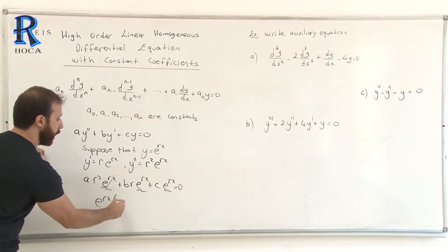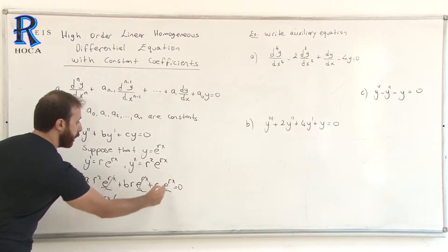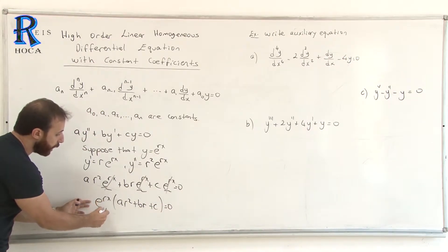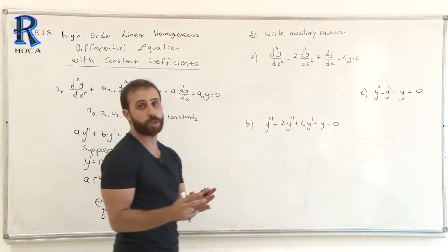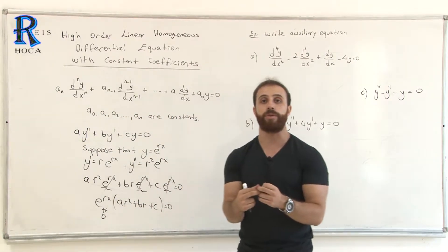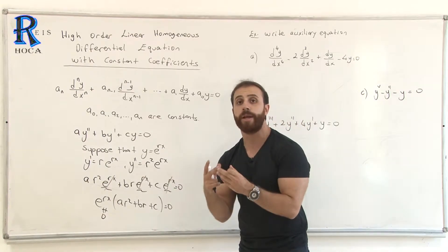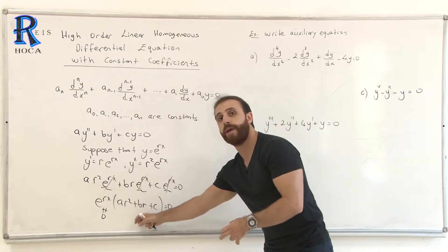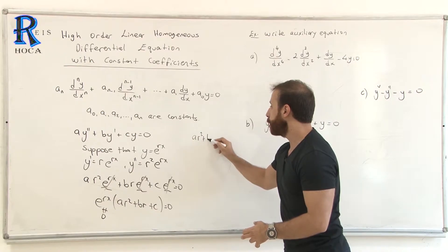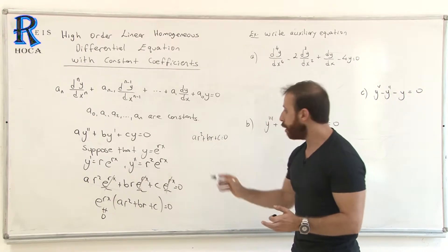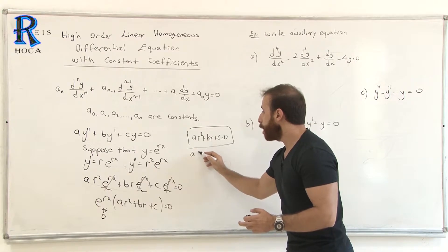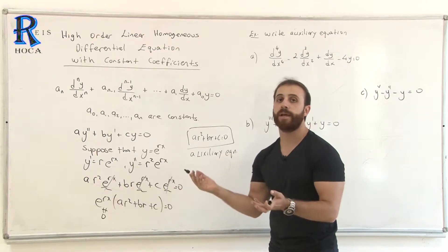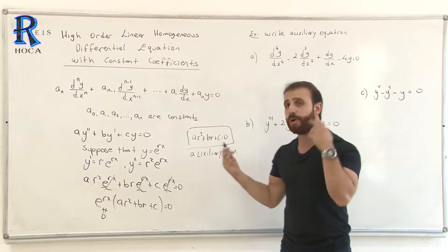After factoring out e^(rx), we get: (a·r² + b·r + c) = 0. Since e^(rx) cannot equal zero, it is the bracketed expression that must equal zero. So the equation a·r² + b·r + c = 0 is called the auxiliary equation, or characteristic equation.